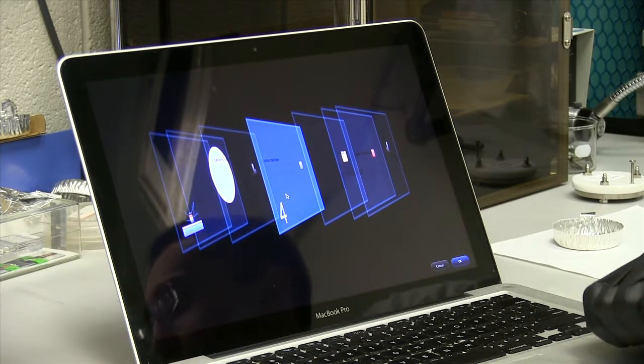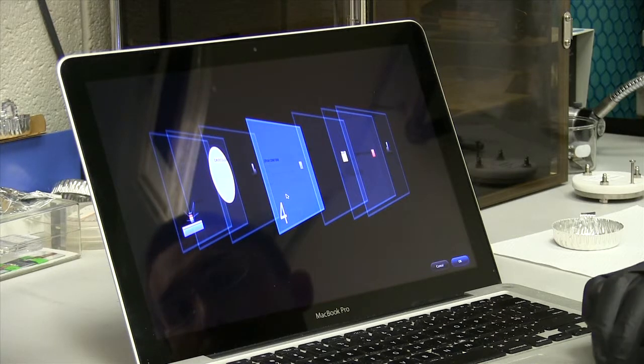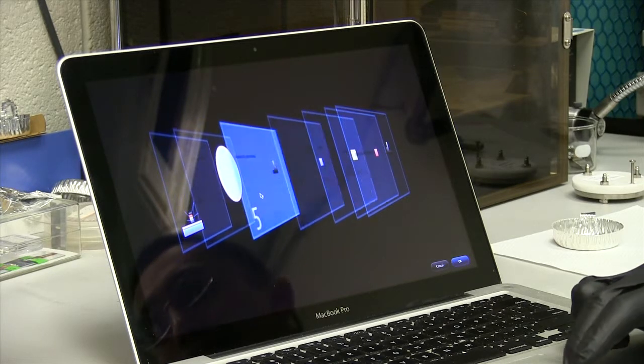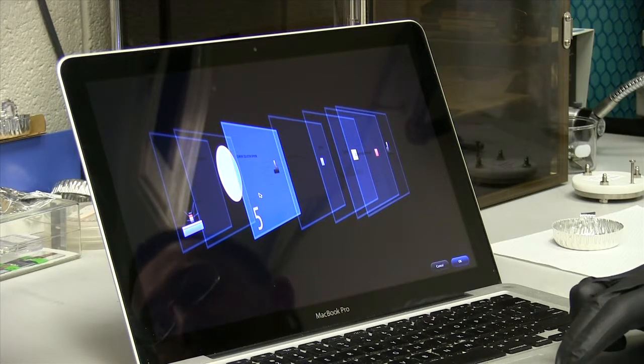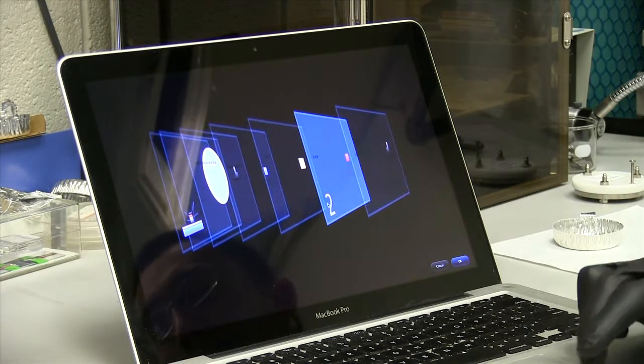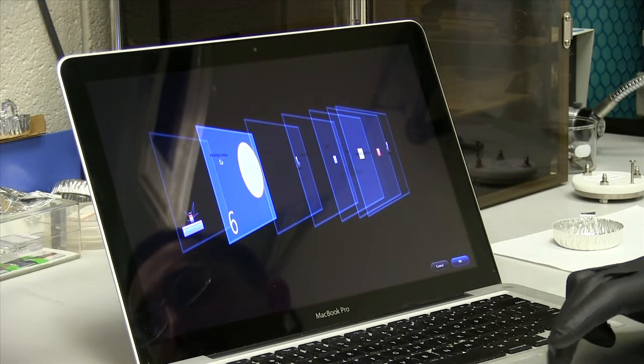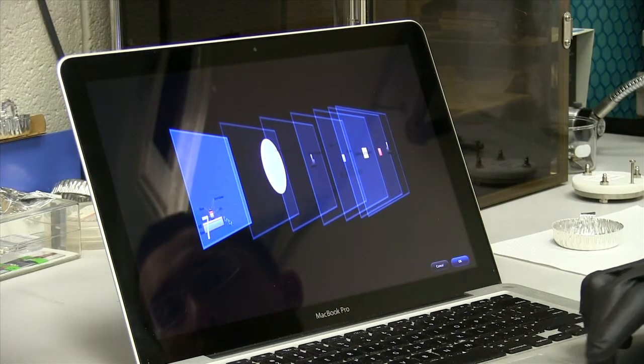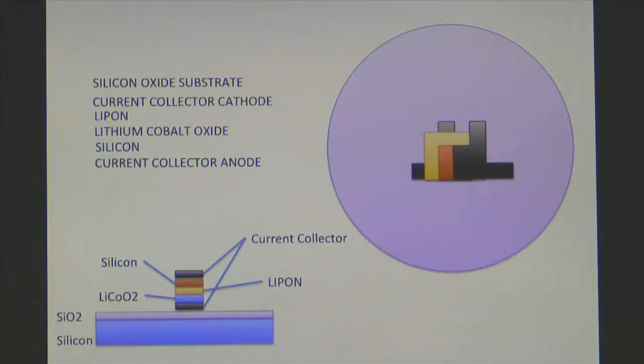Fourth, we have lithium cobalt oxide, which is our cathode. And then we have our current collector cathode. And usually these current collectors, number five and number one, are some metal like titanium or platinum. And then these are all on top of our silicon wafer substrate. And so if you were to put this back together, you have a 3D view of what our battery will look like.